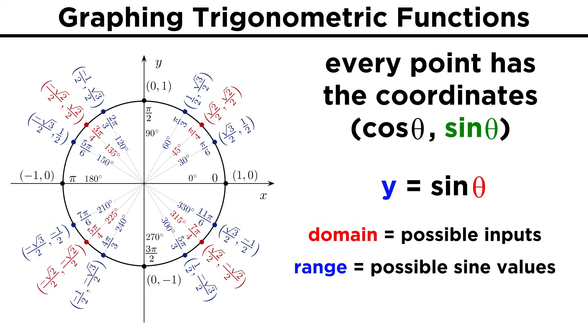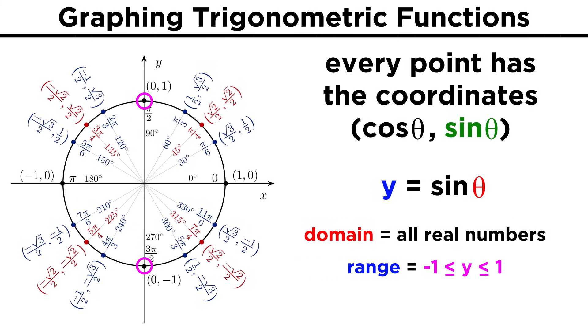The range of the function is all the possible values for sine theta. This means that the domain of sine theta is all real numbers, since we could plug in any angle. It could be greater than two pi radians, we just end up going around and around indefinitely as we approach infinity. And we could also have negative angles, we just go the other way.